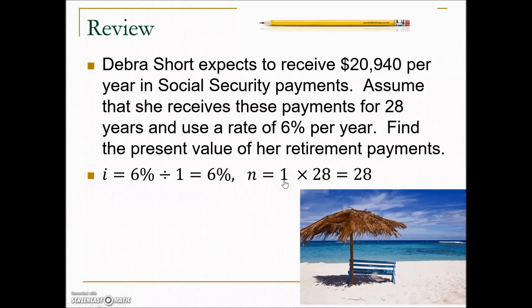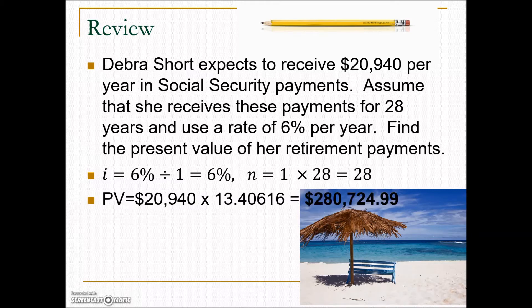The number of compounding periods is once per year for 28 years, giving us an N of 28. We're determining what the lump sum today needs to be in an account so that Deborah receives this payment each year. We look on our present value table for I of 6% and N of 28, find the value, and multiply it by the $20,940 payment she expects to receive. This is what the Social Security Department would need on hand to meet her payment each year.